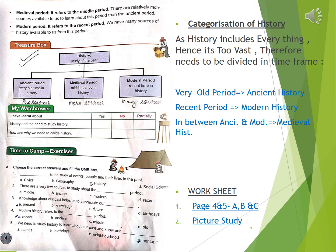In short, we can say: very old time is the Ancient period or Ancient history; the recent period is Modern history; and the time duration between the Ancient and Modern periods is called Medieval history, or Medieval period. Okay, students?